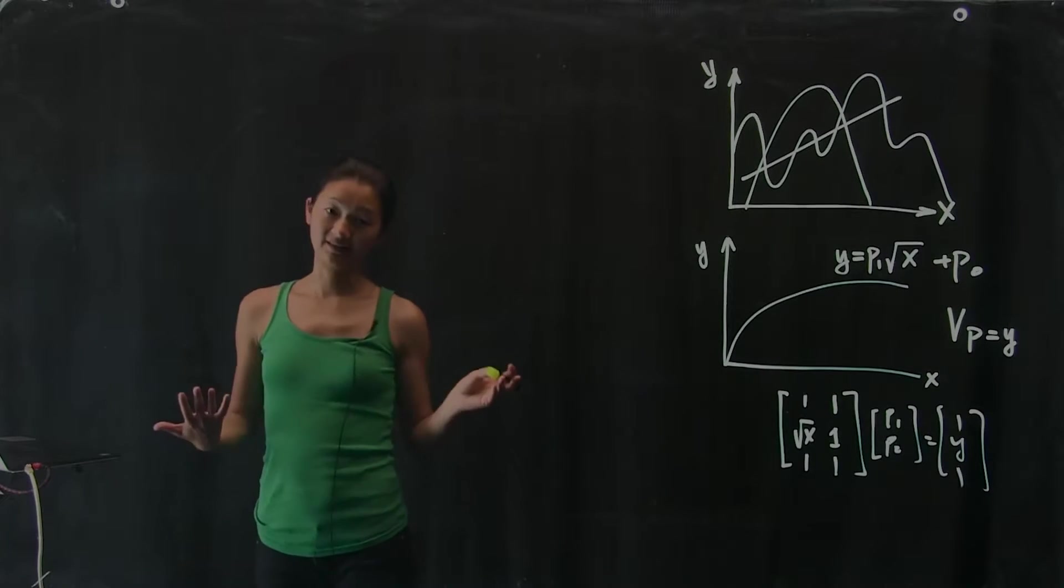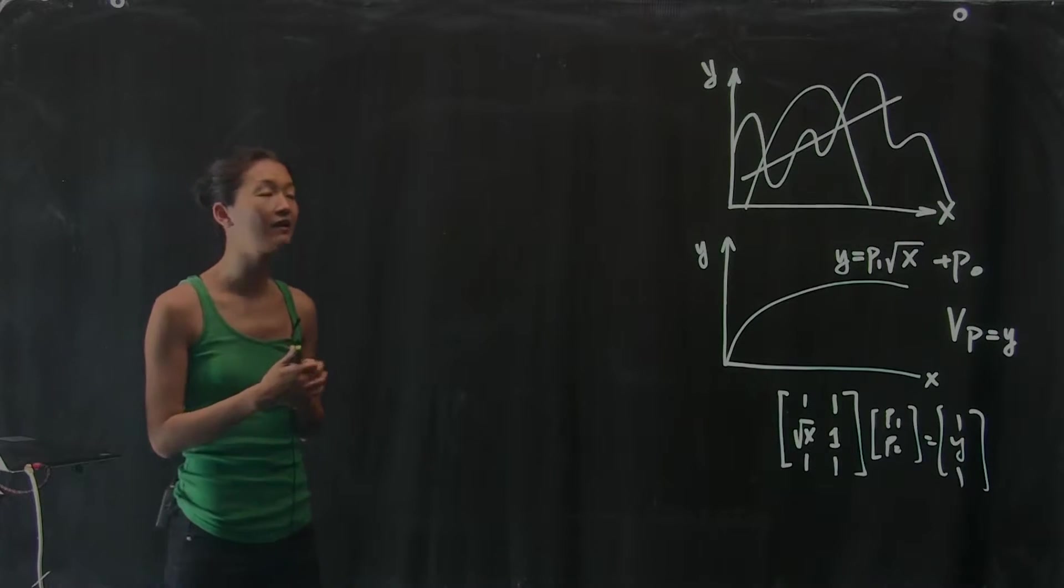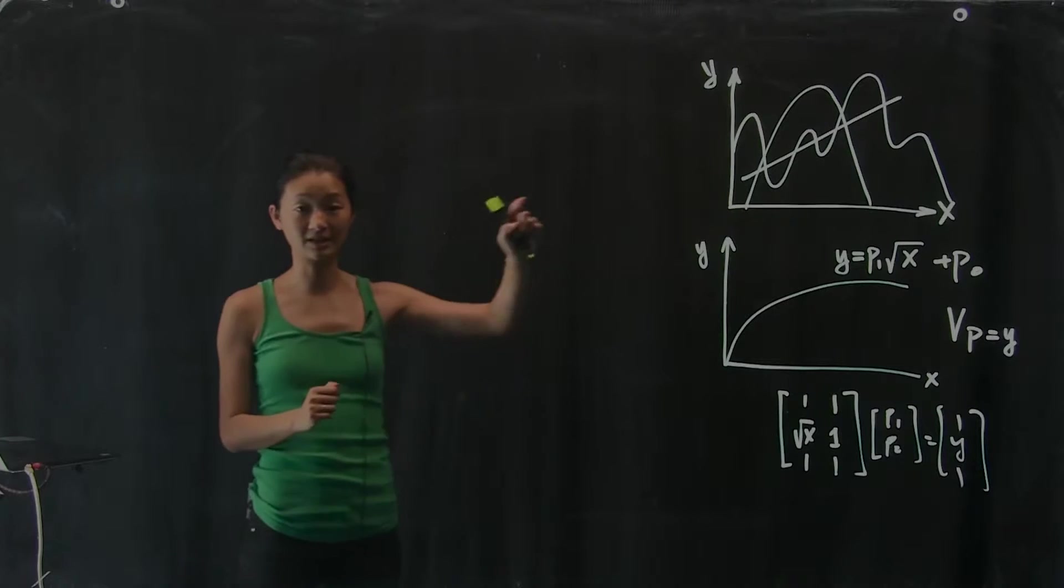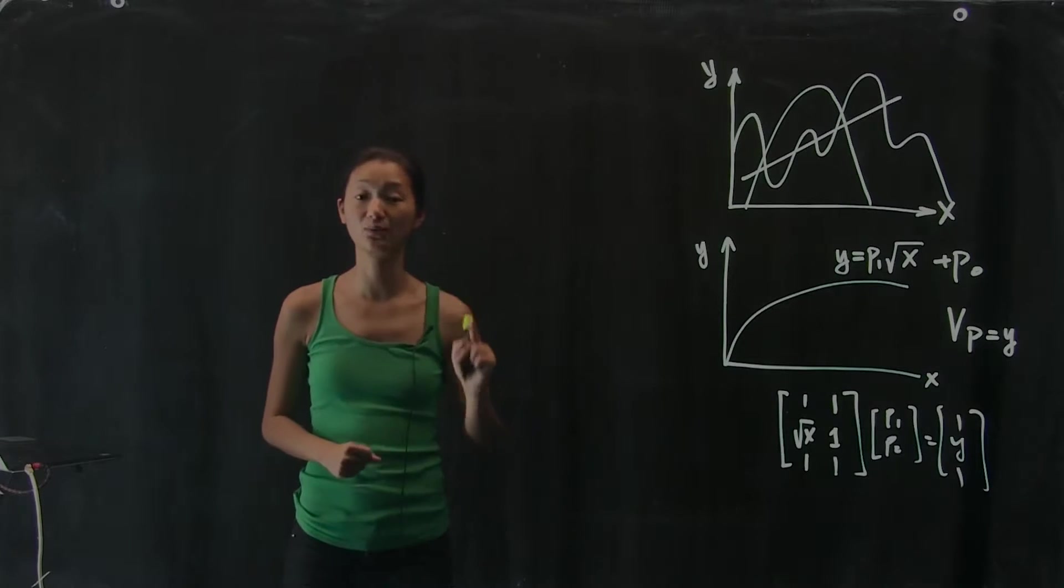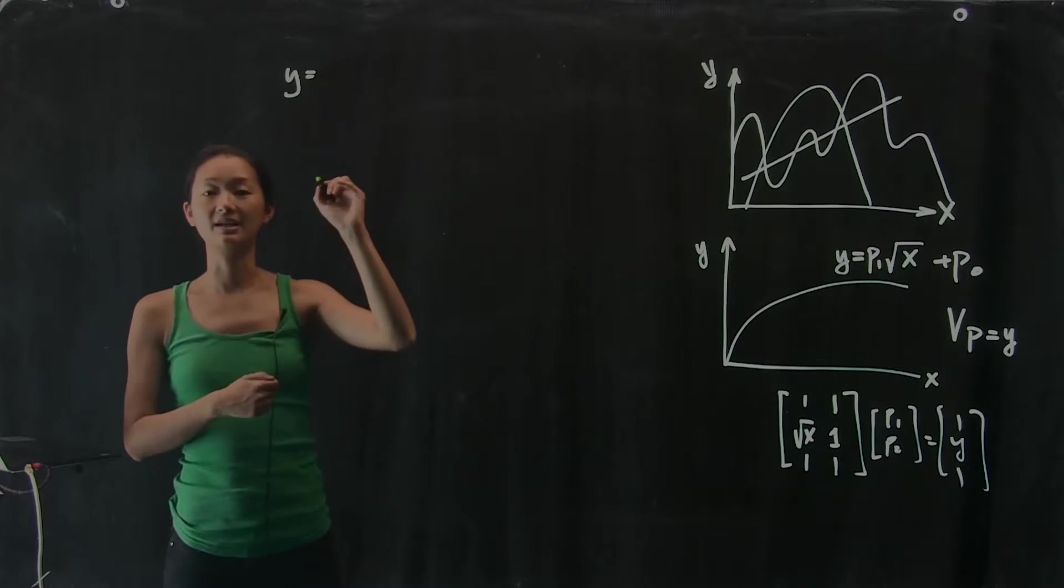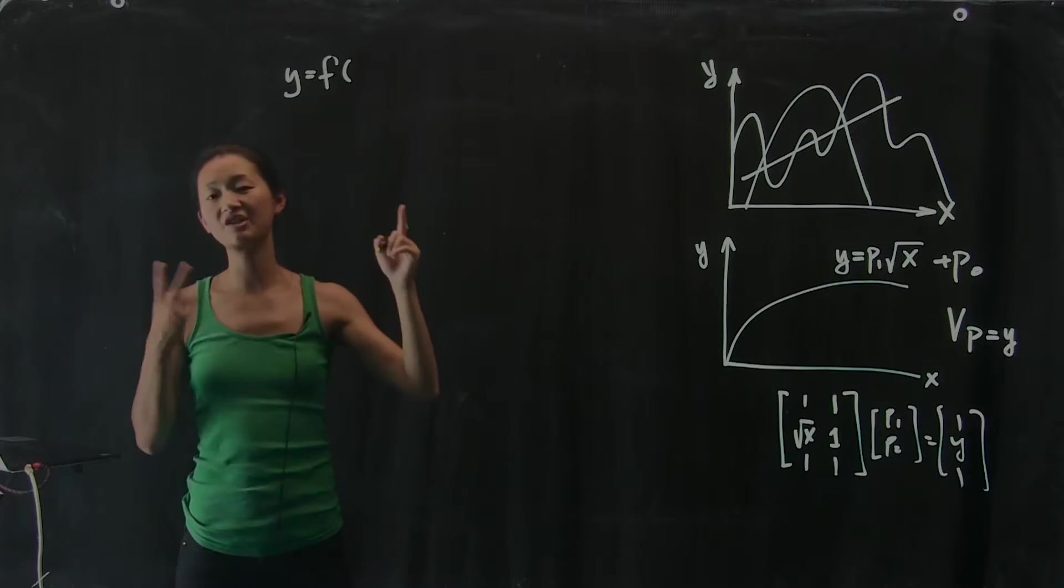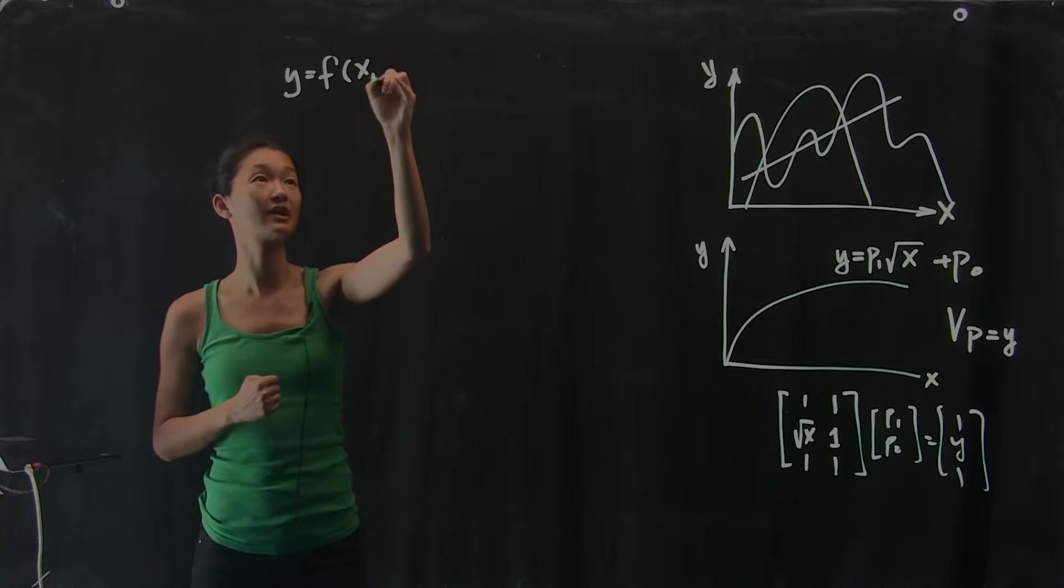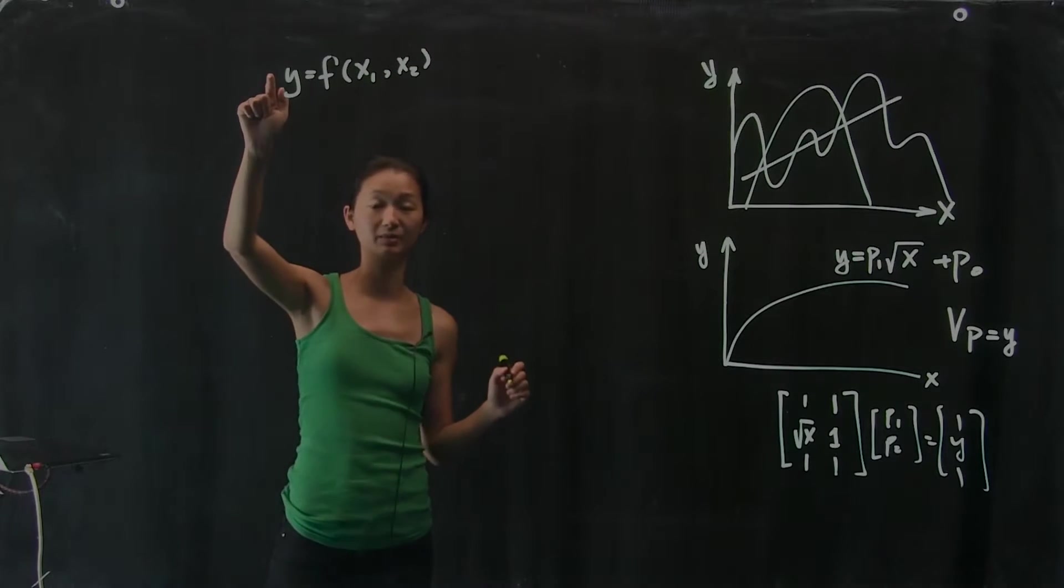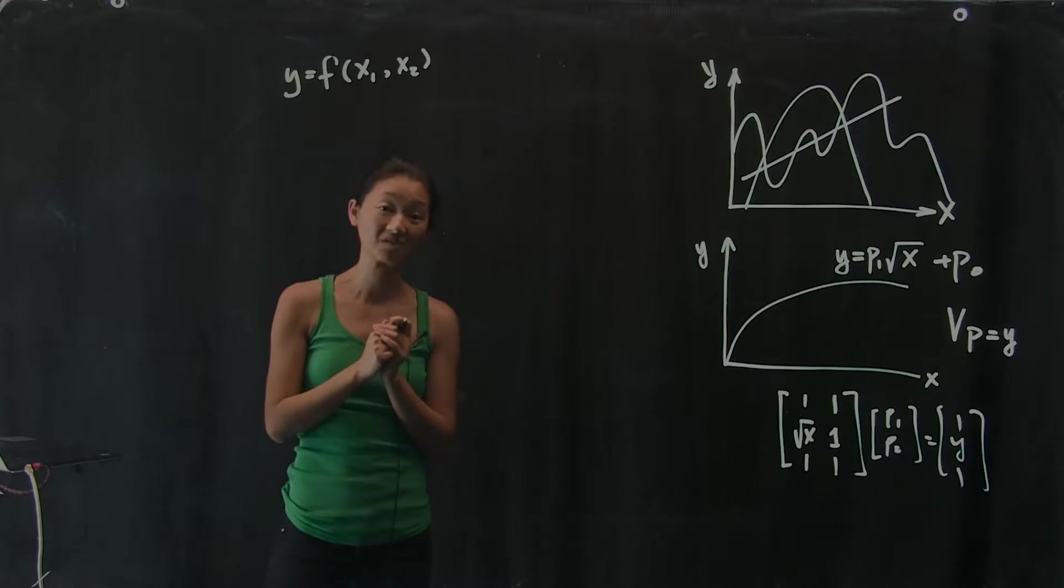Another way of generalizing is by saying, well, what if I had more than one measurement? Instead of just having y as a function of a single measurement x, what if I had more than one measurement? So now the general form of the equation is f as a function of, let's just say, two measurements. I take two measurements, x1 and x2, and I want to use them to predict, to build a model for some kind of output y.